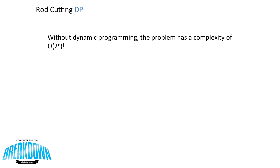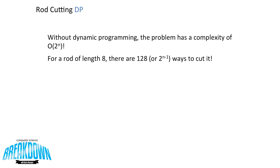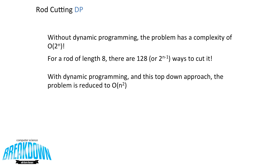Without dynamic programming, this problem has a complexity of O(2^n) — an exponential algorithm. For a rod of length 8, there are 128 ways to cut it, or 2^(n−1), which is where the exponential factor comes in. With dynamic programming and this top-down approach, the problem is reduced to O(n²). That solves the rod cutting dynamic programming algorithm. Thanks for watching, have a great day.